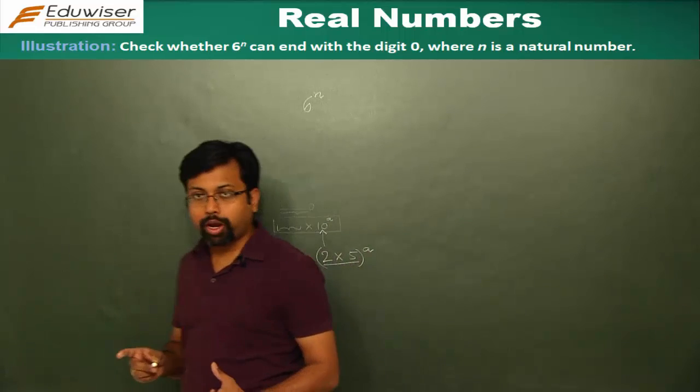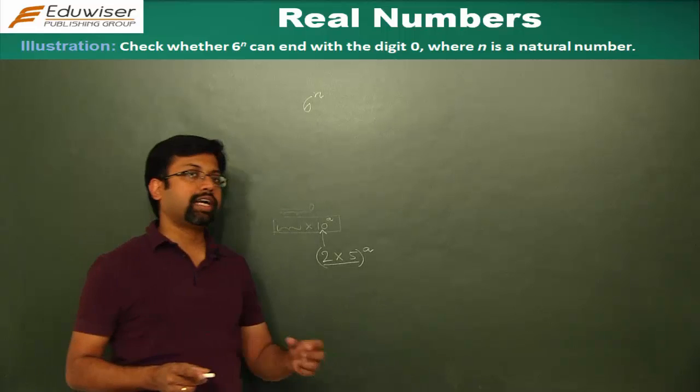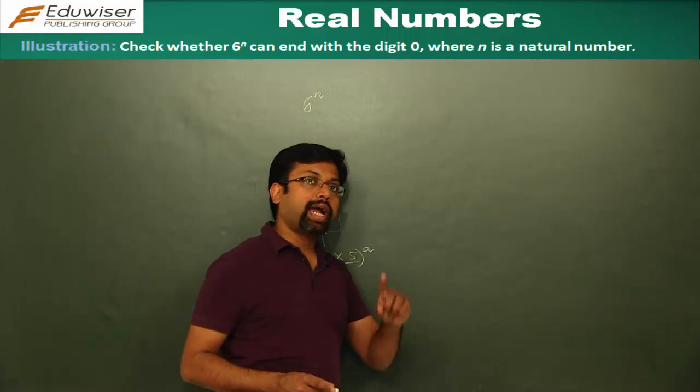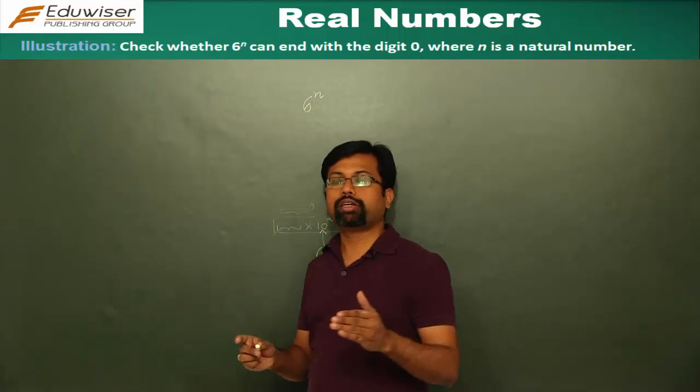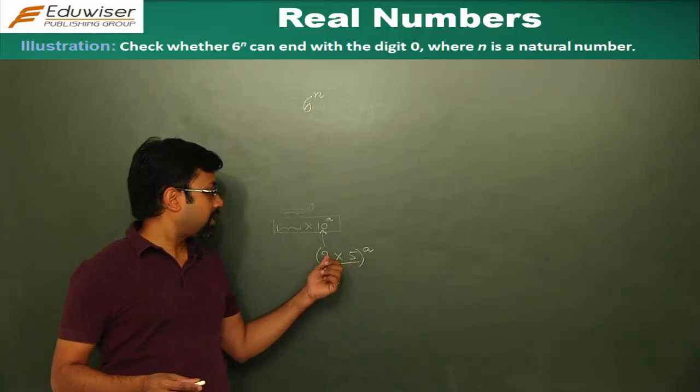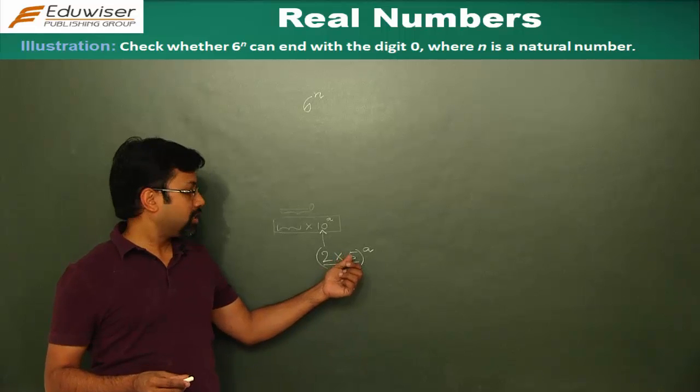For any number to end in a 0, it should have at least 1, 2 and 1, 5 together. For any number to end in a 0, it has to have at least 1, 2 and at least 1, 5.